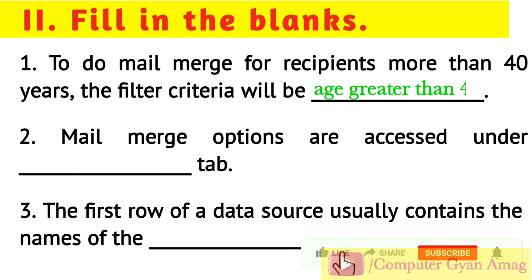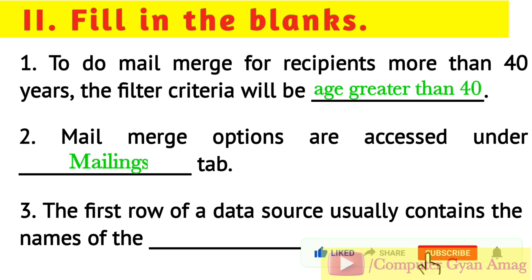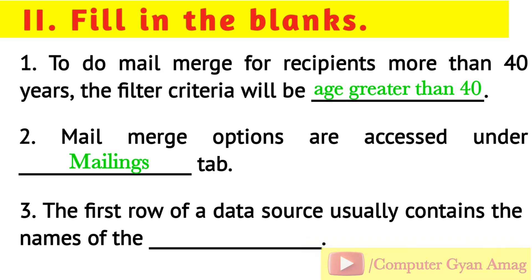Fill in the blanks. 1) To do mail merge for recipients more than 40 years, the filter criteria will be: age greater than 40. 2) Mail merge options are accessed under the Mailings tab.